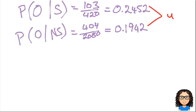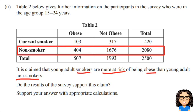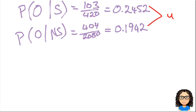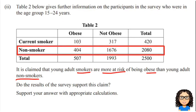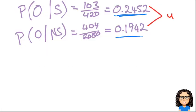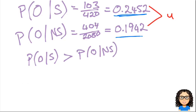Now I need to answer the question. The question asks: do the results of the survey support the claim? The claim is that smokers are more at risk of being obese. In this case, our smokers have a 24% chance of being obese versus a 19% chance for non-smokers. Does that match the claim? Yes, it does. So I'm going to state that the probability of being obese for smokers is more than the probability of being obese for non-smokers, therefore the claim is justified.